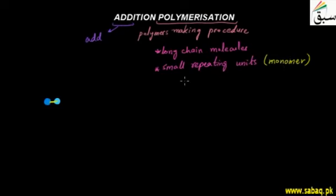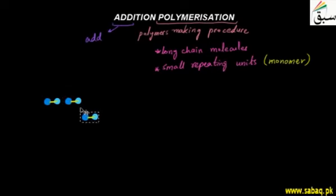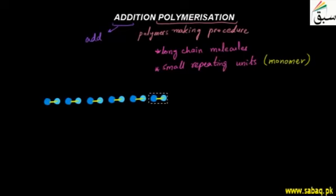When monomers are repeated they become a very long chain. This repeating process forms a very large chain. There will be many units joined in a long chain. This process is called polymerization, and the bonds formed are covalent bonds.